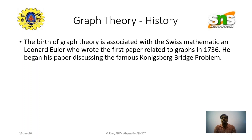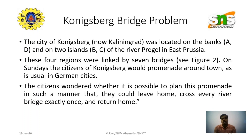The Königsberg Bridge problem initiated the idea of graph theory. The city of Königsberg was located on the banks A and D, and on two islands B and C of the river Pregel in East Prussia. These four regions were linked by seven bridges.